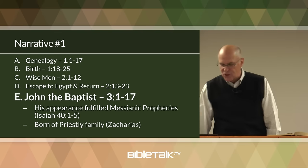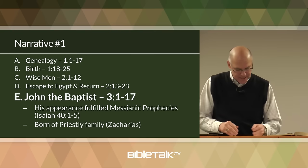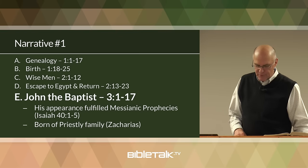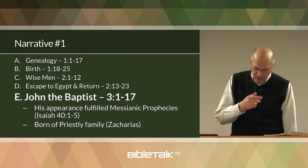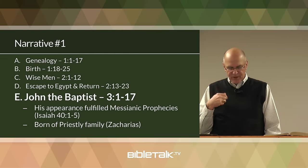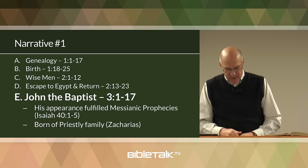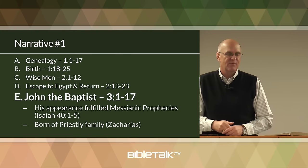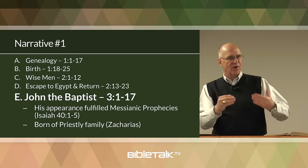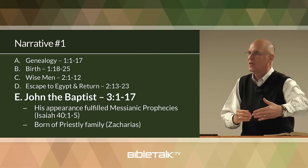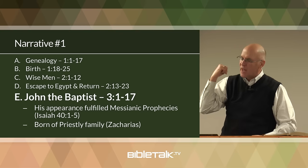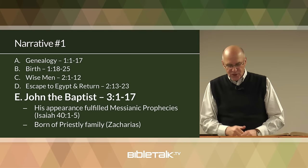The next heading is John the Baptist, chapter 3 verses 1 to 17. The appearance of John the Baptist was also in fulfillment of prophecies concerning the Messiah. In Matthew 3 verse 3, the prophet said that before the Messiah would come, there would be a forerunner who would precede Him and prepare the people for His arrival — Isaiah chapter 40 verses 1 to 5. So Matthew keeps hammering away: Isaiah said there would be someone coming before the Messiah to prepare His way, and John the Baptist is the one that fulfills that prophecy.